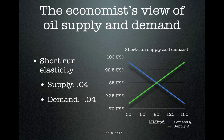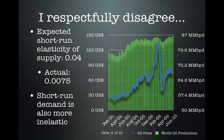Many traditional economists believe that the supply and demand curves in the oil market are approximately linear and relatively inelastic, with short-run price elasticity of supply and demand at about 0.04 and negative 0.04 respectively. I, however, respectfully disagree with this traditional view. When you look at the real-world data of world oil production during the last oil price spike in 2008, we see that the actual short-run elasticity of supply was only 0.0075.